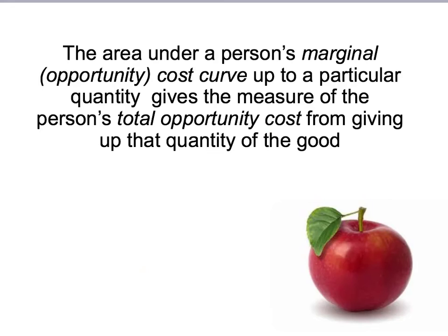To summarise: the area under a person's marginal cost curve up to a particular quantity gives a measure of that person's total opportunity cost from giving up that quantity of the good. For example, the area under Anji's marginal cost curve up to two apples gave her total opportunity cost from giving up two apples.